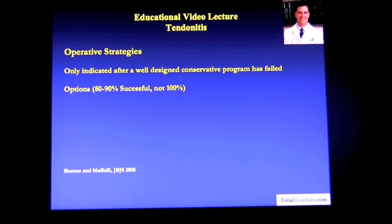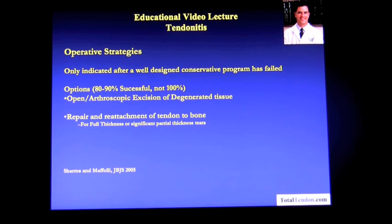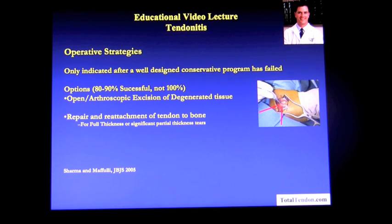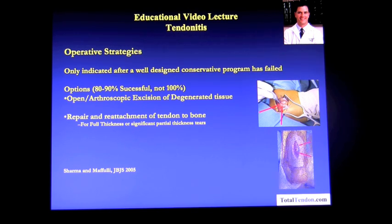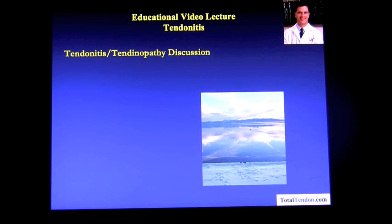Operative strategies for tendinitis and tendinopathy include only pursuing surgery if you've failed a well-designed conservative program. Options are 80 to 90% successful — not 100% — and they include arthroscopic or open excision of degenerated tissue, repair and reattachment of the tendon to bone for full thickness tears, such as a rotator cuff or Achilles tendon tear, or for significant partial thickness tears.